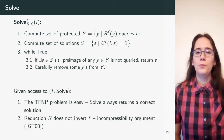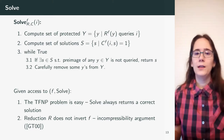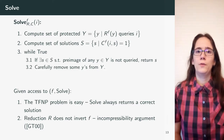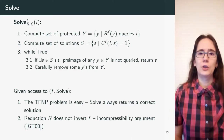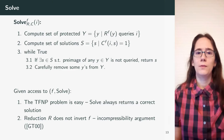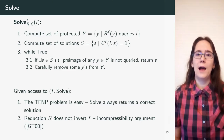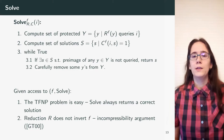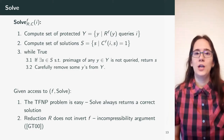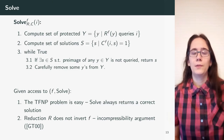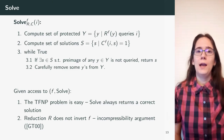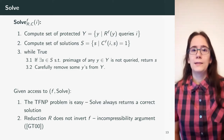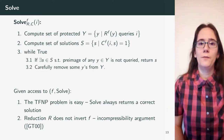We need to prove that given access to oracle F and this oracle solve, the TFNP problem is easy. This is the easy part of the proof, because solve always returns a correct solution. The harder part is proving that the reduction R does not invert F. For this, we use an incompressibility argument by Gennaro and Trevisan from 2000: we show that if R were able to invert F with non-negligible probability, then we would be able to compress a random function more than is information-theoretically possible.